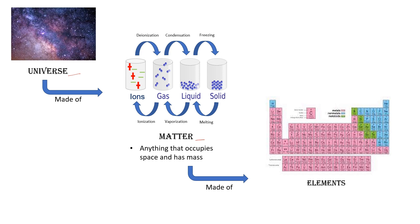Matter can be in four forms: solid, liquid, gas, and ions. The process of conversion of solid to liquid is melting, liquid to gas is vaporization, gas to ions is ionization. Similarly, from ion to gas the process is deionization, gas to liquid is condensation, and liquid to solid is freezing.